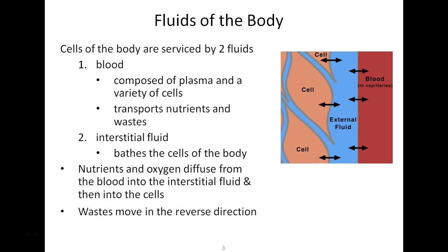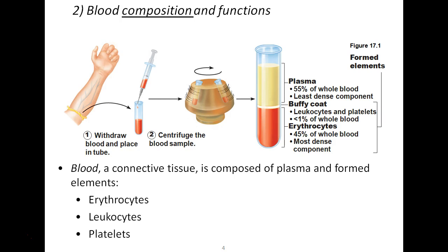Cell membranes are semi-permeable, meaning some items can move in and out. Nutrients and oxygen can diffuse from the blood into the interstitial fluid and then into the cells; conversely, wastes move in the reverse direction — hence the two-way arrows in this diagram. Now we turn our study to blood composition, and later we'll talk about some functions of blood.